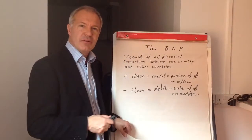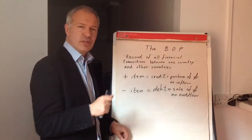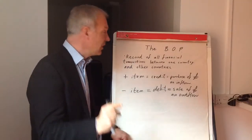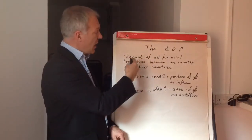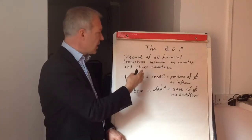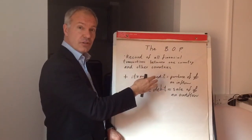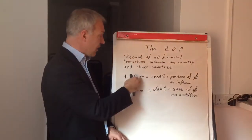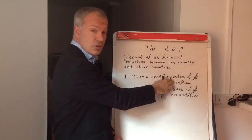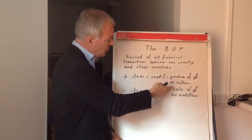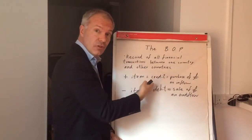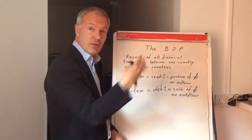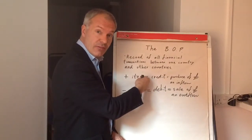Welcome to the balance of payments. Sometimes a little bit tricky, but we'll go through the key basic points. The balance of payments is basically a record of all financial transactions between one country and other countries, so between the UK and the rest of the world. Any positive item on the balance of payments is when there's been a purchase of pounds — that's a credit and an inflow to the UK, such as an export of beer from Britain to other countries. People would buy pounds in order to buy that export.